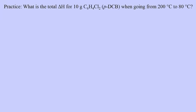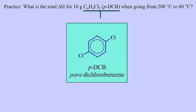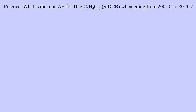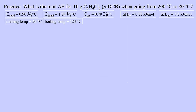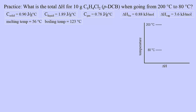Let's try another problem. What is the total enthalpy change for 10 grams of paradichlorobenzene when going from 200°C to 80°C? We are no longer dealing with water, and so we have a completely different set of values for the specific heats, for the heats of phase changes, and for the melting and boiling temperatures. Using these values, we will work out each delta H. The temperature is decreasing here, so heat will be lost instead of gained, but the calculations are exactly the same as before.